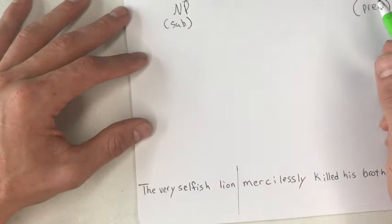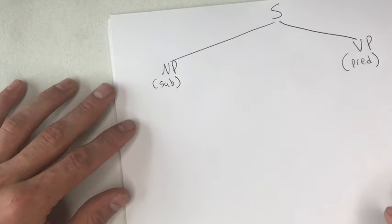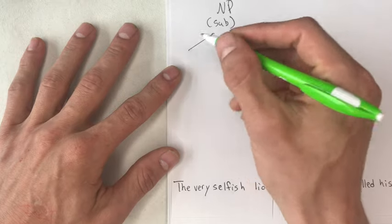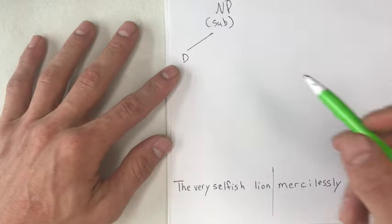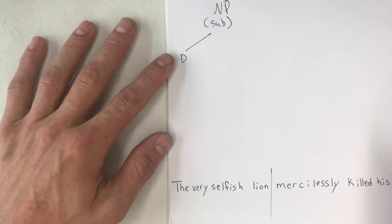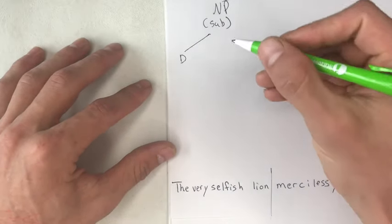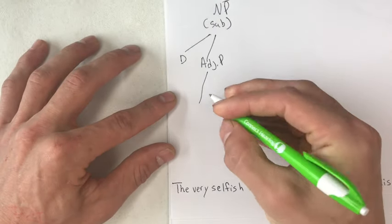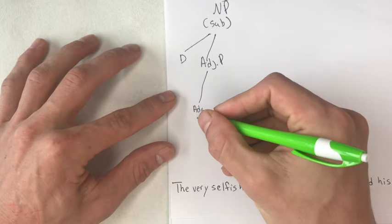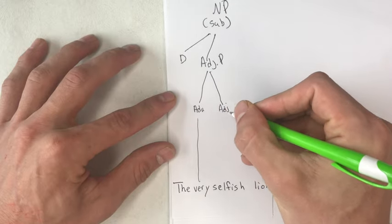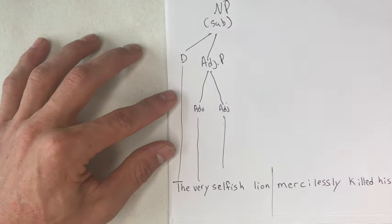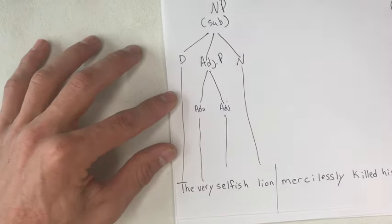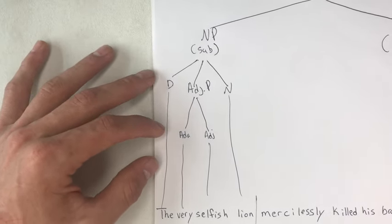Both of these two constituents can be divided further into smaller parts. For example, the noun phrase — our subject, 'the very selfish lion' — can be divided into a determiner, which is the word 'the.' You might have heard these called articles; an article is a type of determiner. We also have an adjective phrase, which is divided into an adverb 'very' and an adjective 'selfish.' I'll draw little lines from the labels to the words. Then another part of the noun phrase is the simple noun 'lion.'